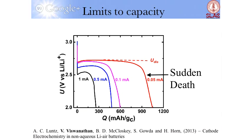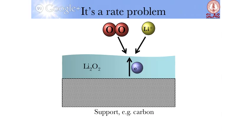What we want to do is understand phenomenologically what causes sudden death, and then try to fix it. Sudden death is a phenomenon that arises from a rate problem, because we have a galvanostatic condition — we want to draw a certain current. That means there is a certain rate at which you need to transport lithium ions to the reactive site, a certain rate at which you transport oxygen to the reactive site, and a certain rate at which you need to supply electrons to the reactive site.